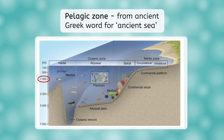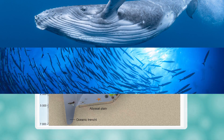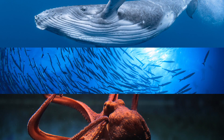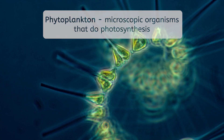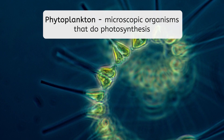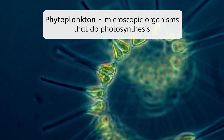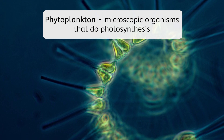In the pelagic zone, we find whales, fish, many types of invertebrates, and phytoplankton — the microscopic organisms that are responsible for the ocean's photosynthesis.